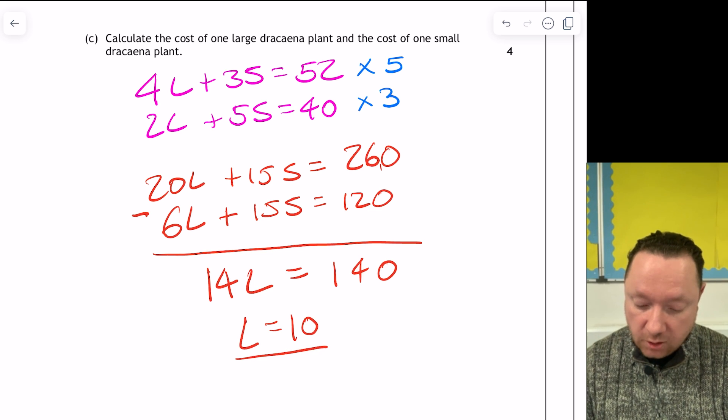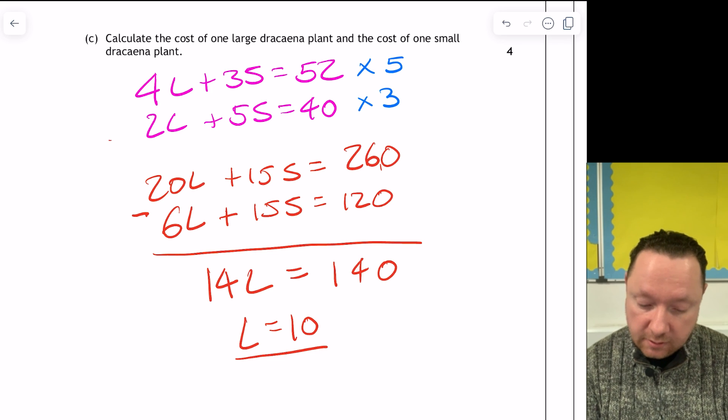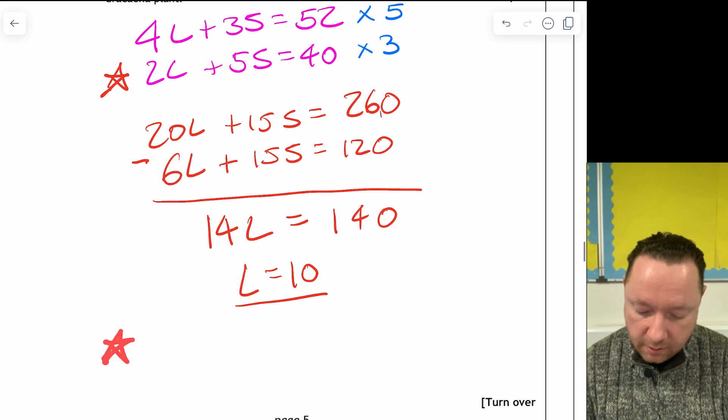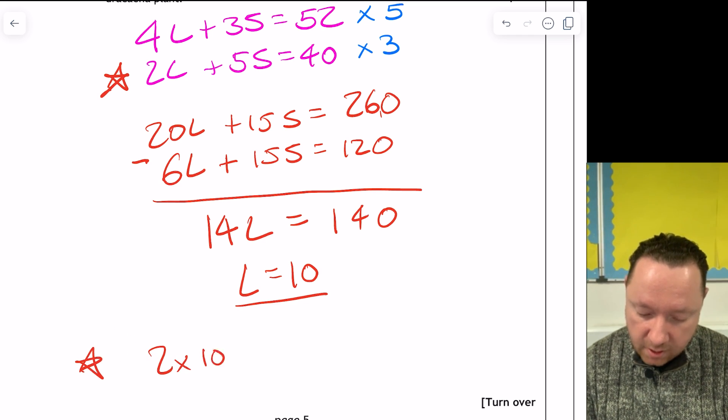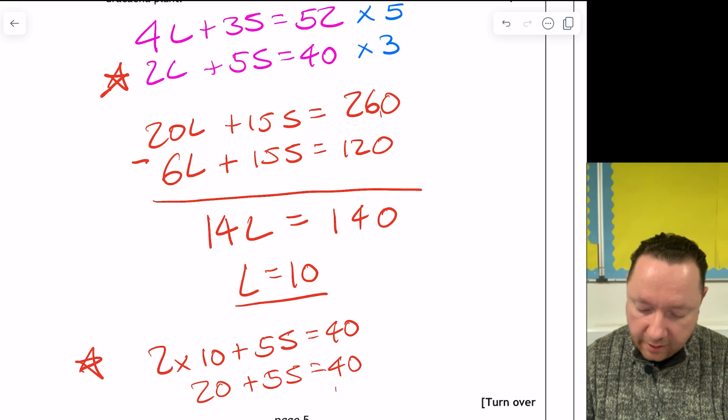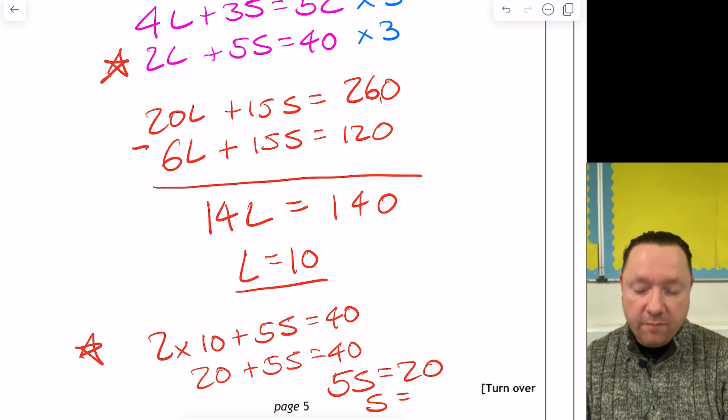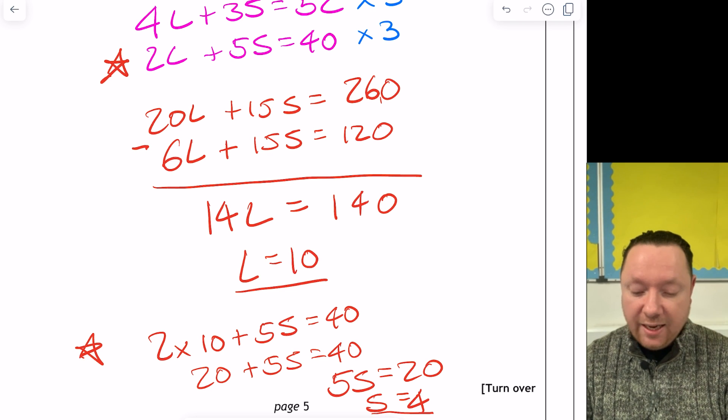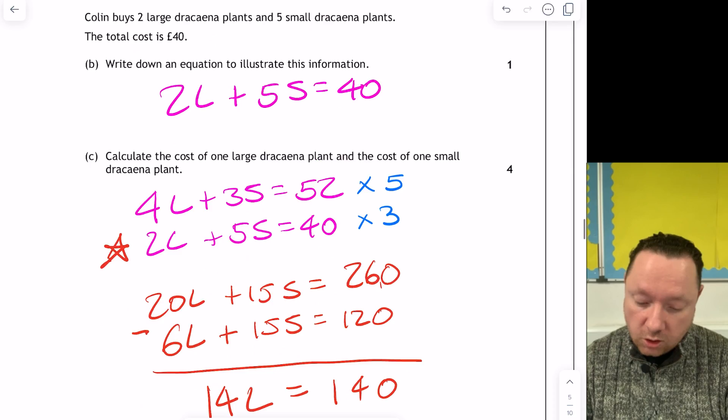Now we sub in any equation you want, so I'll just pick this one. So subbing in, we've got 2 times 10 plus 5s equals 40. That's 20 plus 5s equals 40. Taking away 20, 5s must be 20. So S must be 20 divided by 5, which is 4. Now if you stop there, you would lose a mark because you need to answer the question.